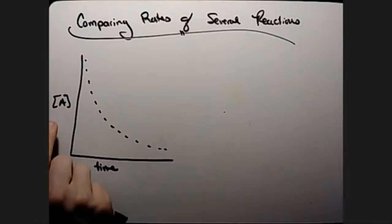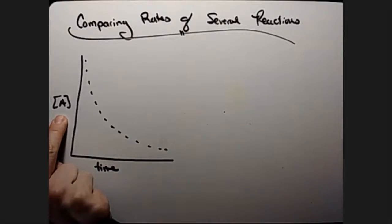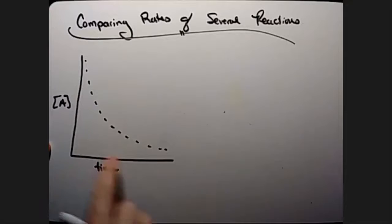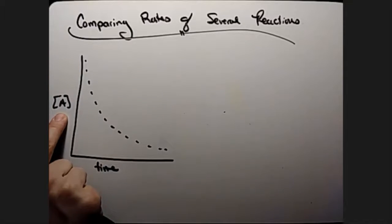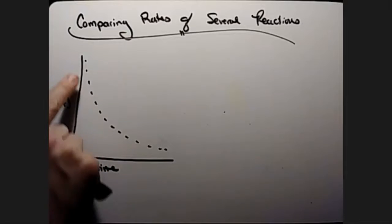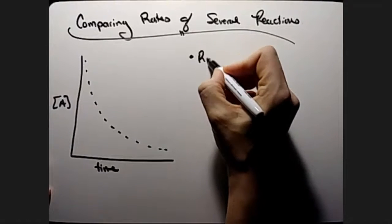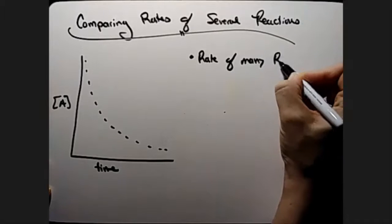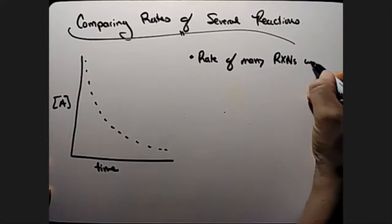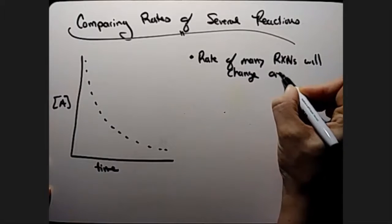Now, I've made a little graph for you over here about how concentration of maybe some reaction can change over time. What I want you to notice is how that concentration actually doesn't stay constant, and it's not changing at a constant rate. The rate of many chemical reactions will change over time.